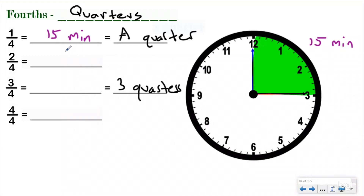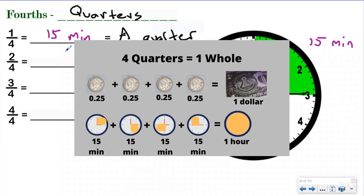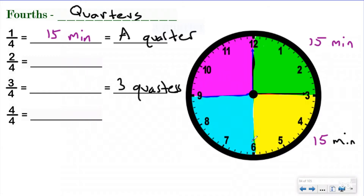Now, that's different than when they talk about money, because when they talk about money, a quarter is 25 cents. A lot of people think when they say a quarter and they're talking about time, they're talking about 25 minutes. But in money, a quarter is equal to 25 cents because when you have four equal groups of 25, that makes a dollar. For a clock, when you have four equal groups of 15, you make four groups of 15 minutes. So if you do 15 plus 15 plus 15 plus 15, that gives you a total of 60.